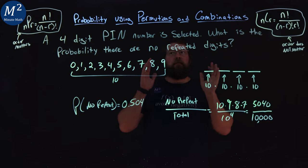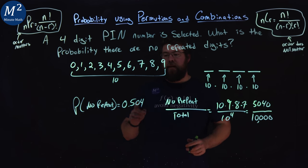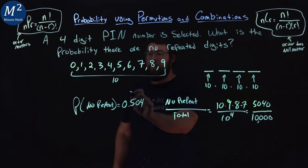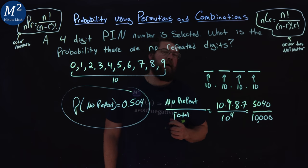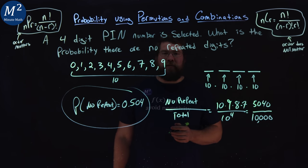So the probability that if we have a four-digit PIN number selected and there are no repeated digits is 0.504. I hope you learned something here about probability, and as always, thanks for watching.